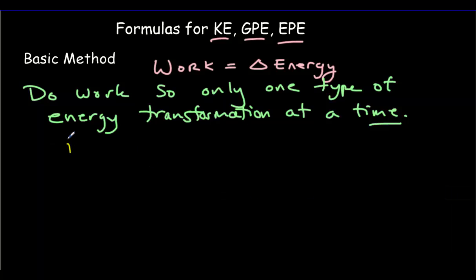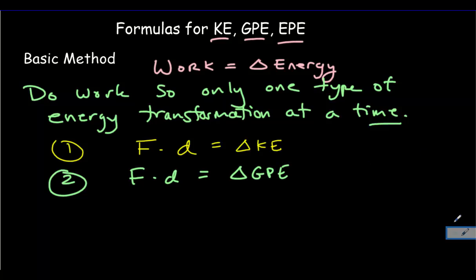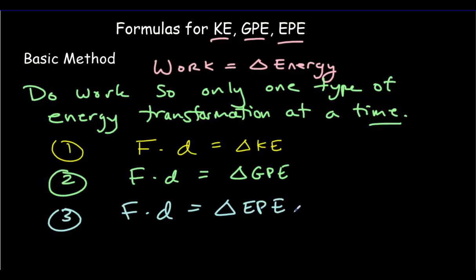In our first case, we'll do work — force times distance — in such a way that there are only changes in kinetic energy. In our second case, we're going to do work in such a way that there are only changes in gravitational potential energy. And in the third case, we're going to do work in such a way that there are only changes in elastic potential energy.